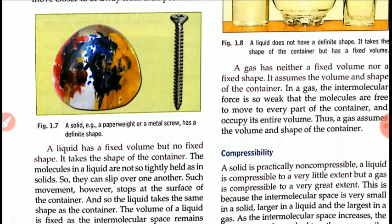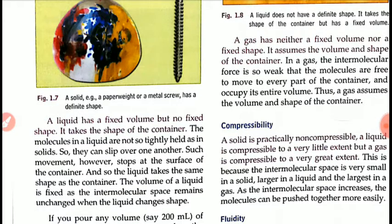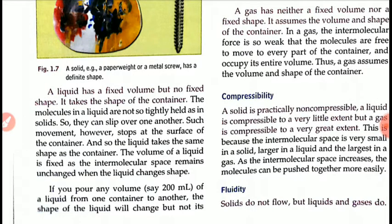A liquid has a fixed volume but no fixed shape — it takes the shape of its container. The molecules in a liquid are not so tightly held as in a solid, so they can move or slip over one another. Such movement stops at the surface of the container, so liquids take the shape of the container.